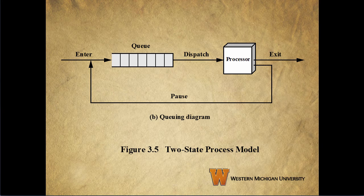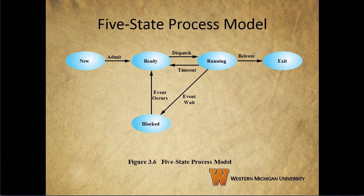Unfortunately, this won't work very well, since it assumes that every process is always ready to run. Remember process B, which is waiting for an I/O call to return? This causes a problem, since if we just try to dispatch it every time it reaches the front of the queue, we'll waste a lot of time just to find out that it needs to go back to the back of the line again. We can solve this problem by splitting the ready state into ready and blocked states, which leads us to the five-state process model.